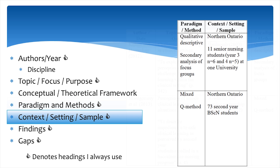The context, setting, and sample should also be noted. This is another location that the country the study was conducted in can be listed. Just don't put the same information in two spots. Be concise and consistent. Whenever you are putting more than one type of information in a column, make sure you are also consistent in the way and order it is listed. For example, always note the setting, then the sample in this column. Use a bulleted list or separate information by paragraphs or periods.